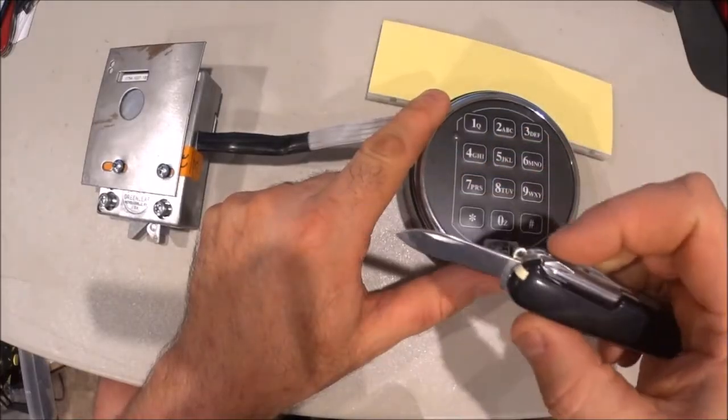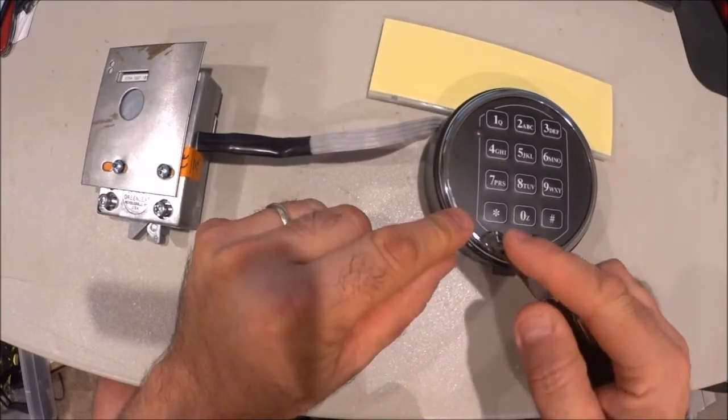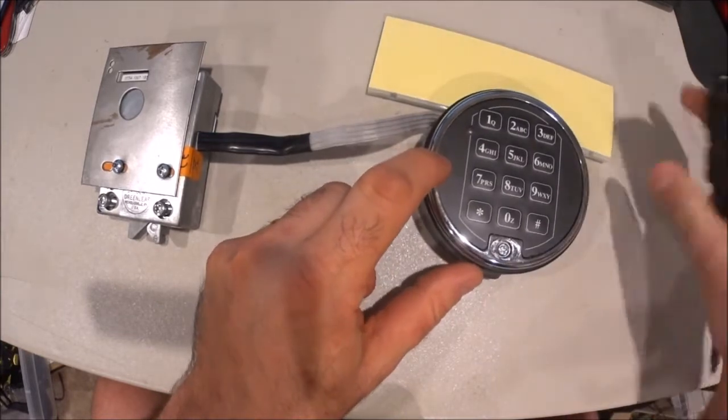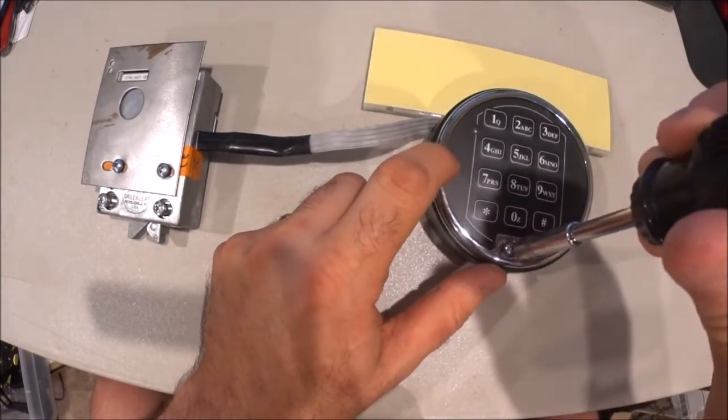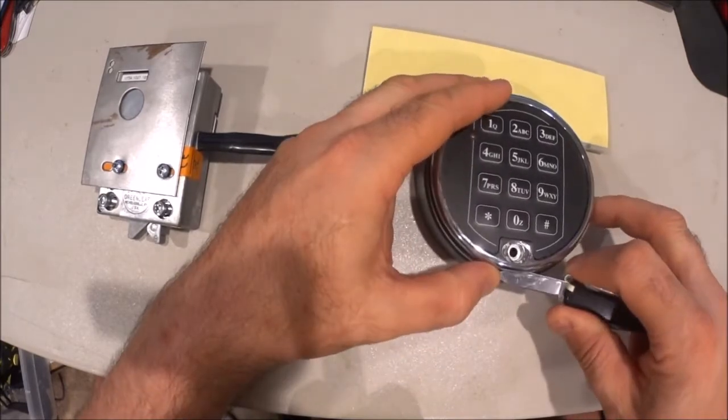So, take your pocket knife, pop this S&G logo off the bottom right here, just slip under it and pop it off. That reveals this number 2 Phillips screw. Pop that guy out, get your handy dandy blade, pry up gently.